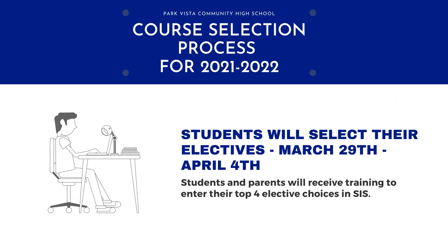On March 29th, we will be releasing a short video showing parents and students how to enter elective choices on the SIS course request screen. Students will then have from March 29th to April 4th to choose their electives for next school year. We ask that students choose electives in order of preference. We make every effort to give students their first choices, but sometimes it's not possible. Giving us additional options helps ensure that students are getting the classes they are most interested in taking.